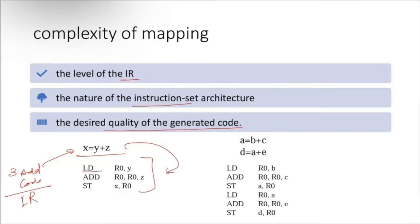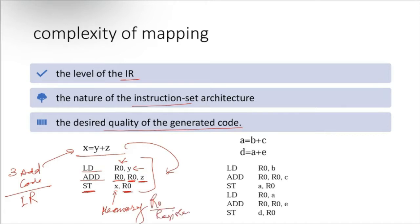You can see: load LD, put the value of Y into register R0, then add R0 and Z. Register R0 is equivalent to Y, then store the result back into R0 itself — overriding R0 after doing the addition. Then store the content of R0 to X, where X is pointing to some memory location. We have two instructions in intermediate code: A = B + C, and D = A + E. You can see these form all of the assembly instructions.